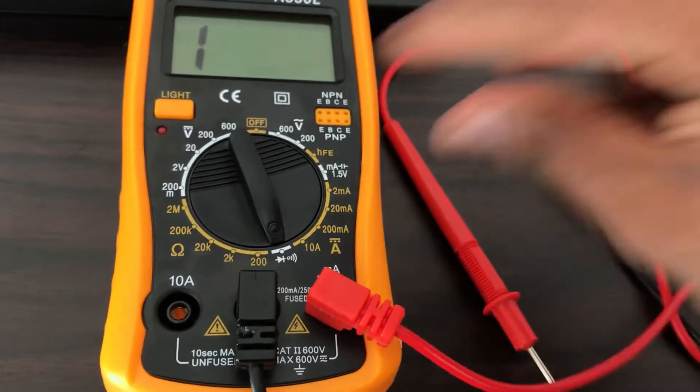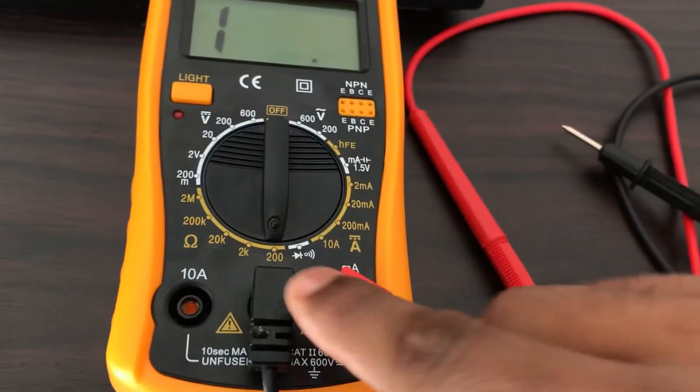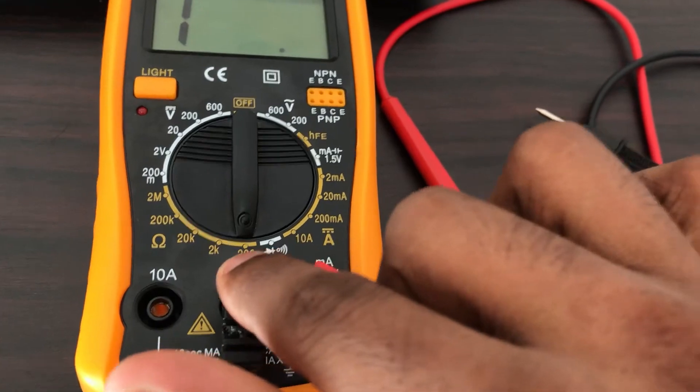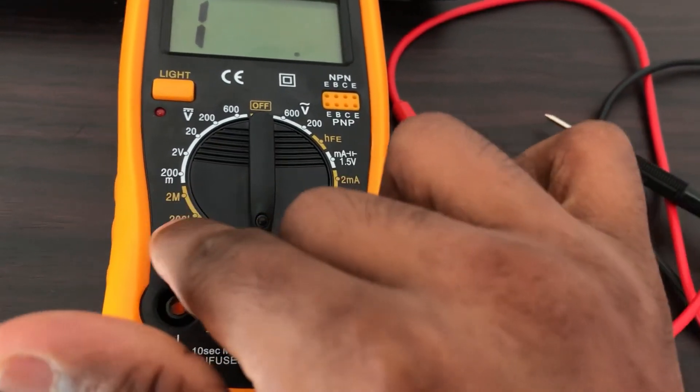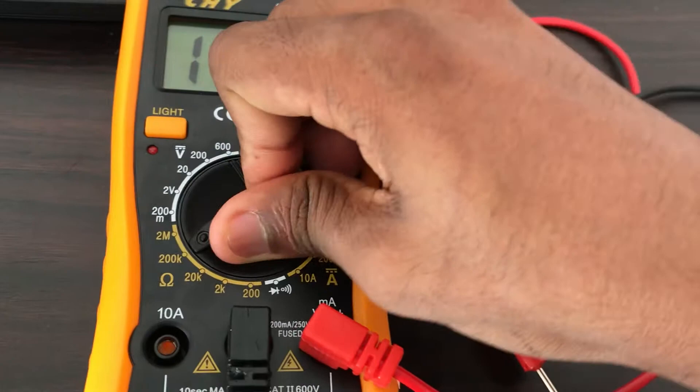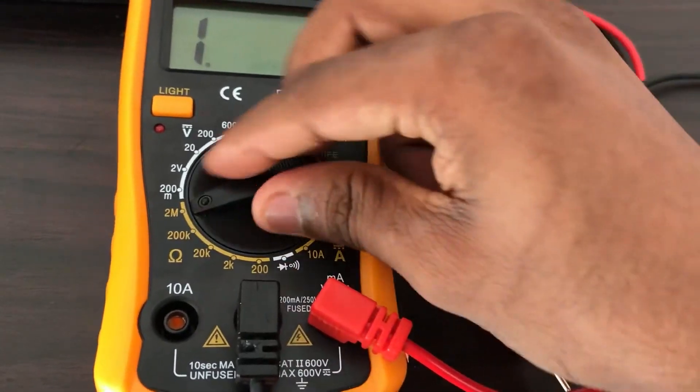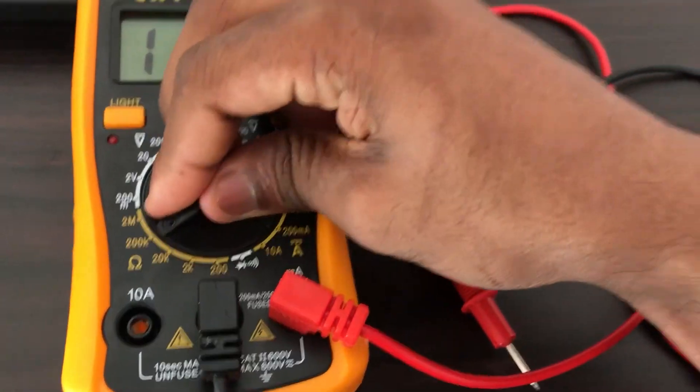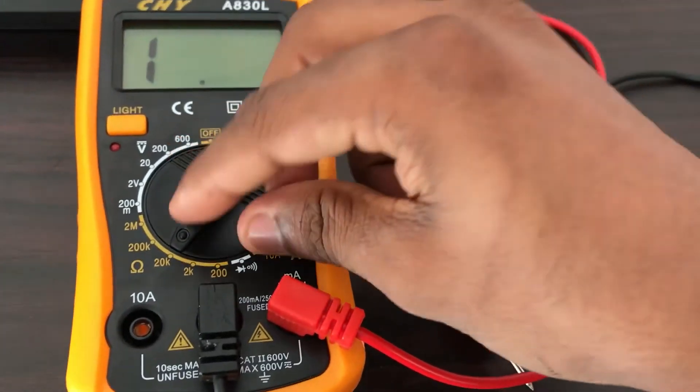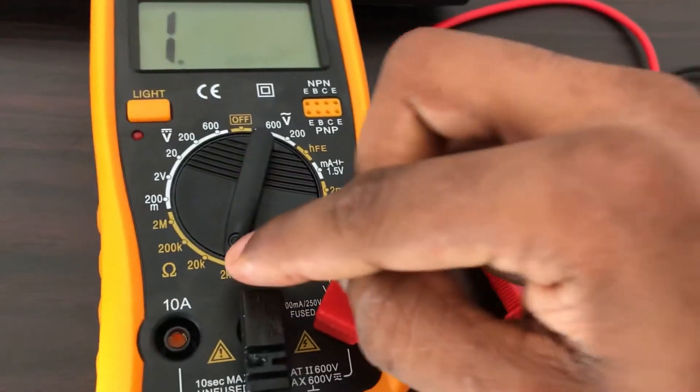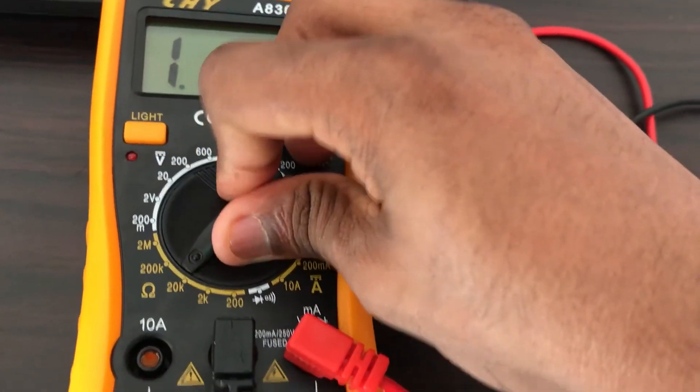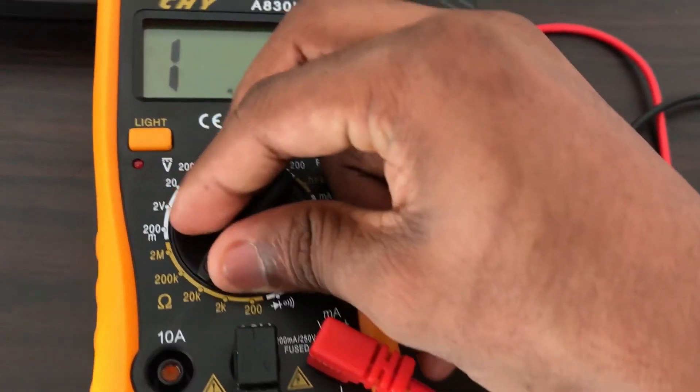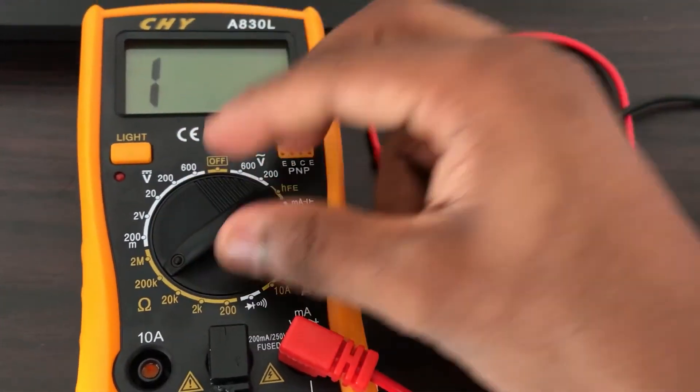Next is the ohms range. If you are going to measure the resistance between two points, you can use this. Here you can measure the resistance up to 200 ohms, and here you can measure up to 2 mega ohms. The accuracy or the number of decimal places will increase when we decrease the range. To take accurate measurements, you can always use lower ranges. If you're not sure, put it somewhere here, and if it overshoots the value, always put it to an upper range.